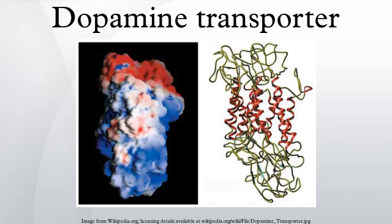In the substantia nigra, DAT is localized to axonal and dendritic plasma membranes. Within the perikarya of pars compacta neurons, DAT was localized primarily to rough and smooth endoplasmic reticulum, Golgi complex, and multivesicular bodies, identifying probable sites of synthesis, modification, transport, and degradation.